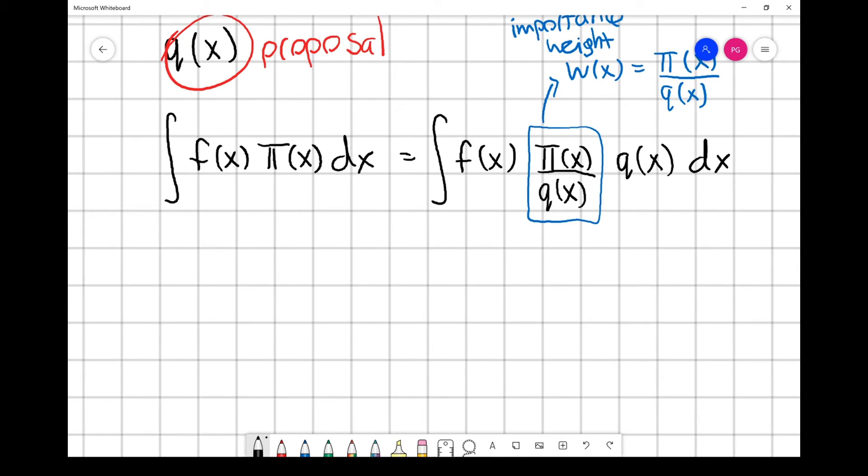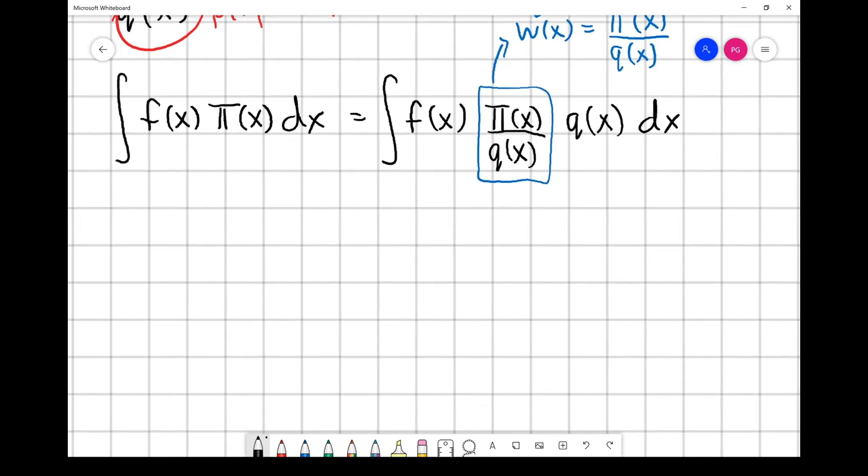Why did we bother doing this? Now we can write down our Monte Carlo estimate. Rather than generating samples from π(x), now we can think of it as estimating f multiplied by W using samples generated from Q.